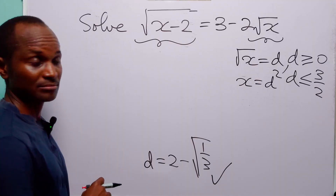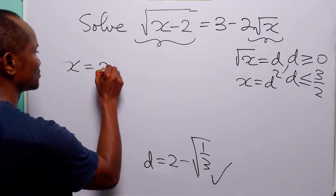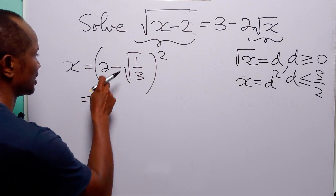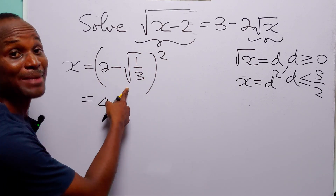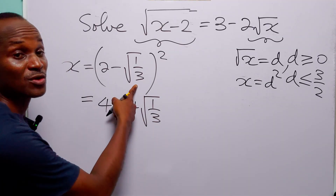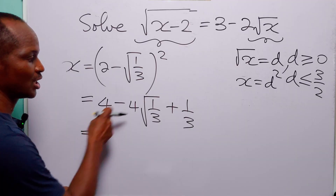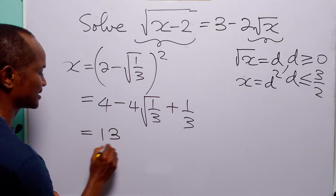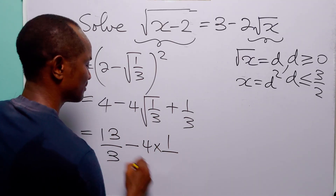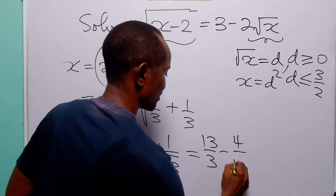Now that we have a value for d, to find the value of x — which is what we are looking for — we square this. So we have that x is equal to 2 minus root 1 over 3, squared. Opening this bracket: 2 squared is 4, 2 times 2 times minus root 1 over 3 is minus 4 root 1 over 3, and minus root 1 over 3 squared is plus 1 over 3. Now, 3 times 4 is 12 and 12 plus 1 is 13, so we have 13 over 3. Then minus 4 times the square root of 1, which is 1, divided by the square root of 3. So this is equal to 13 over 3 minus 4 over root 3.